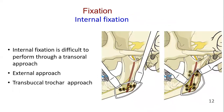Internal fixation is difficult to perform through a transoral approach because of the problem with access. It is easier if an external approach is used, and then can be performed using mini plates and monocortical screws. Bone plate or bicortical screw osteosynthesis can also be performed using trans-buccal trocar instrumentation.